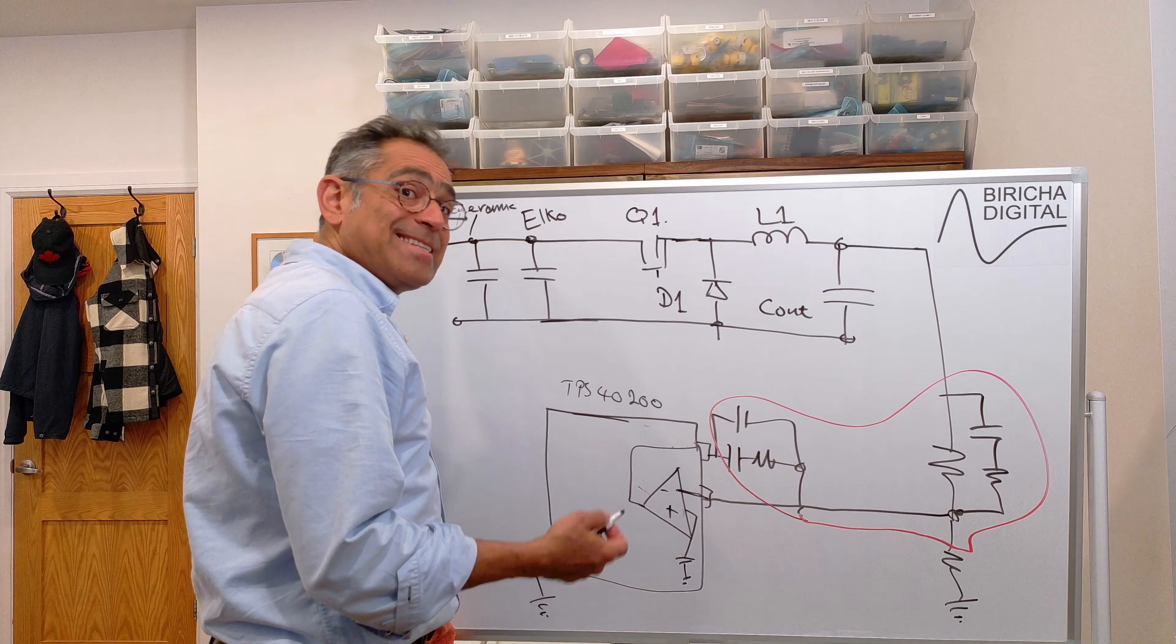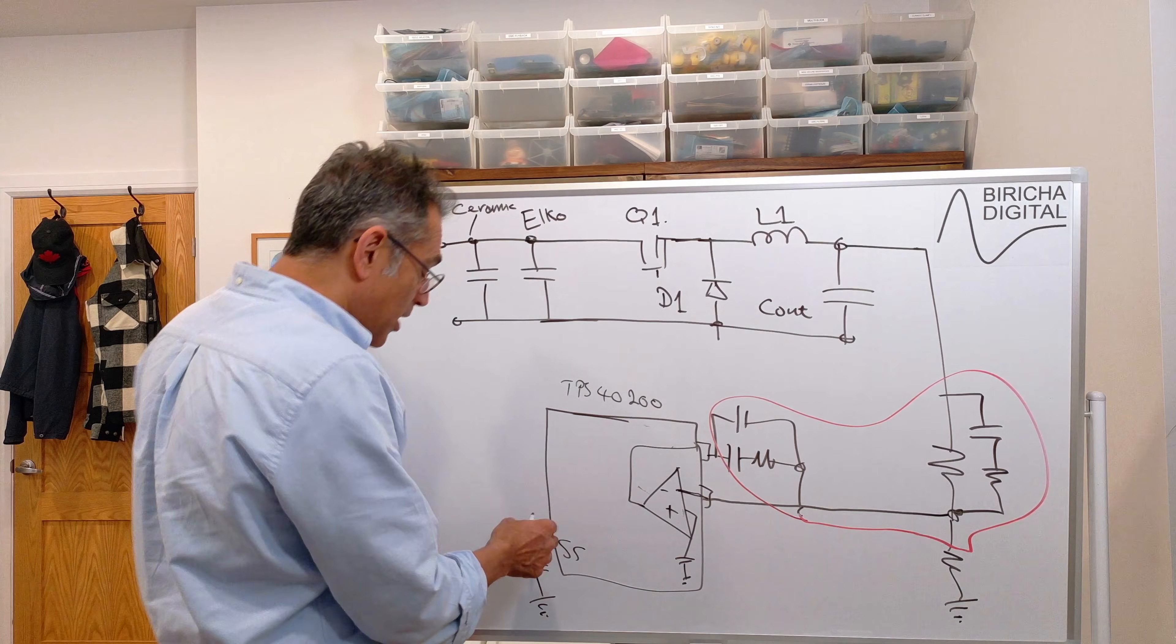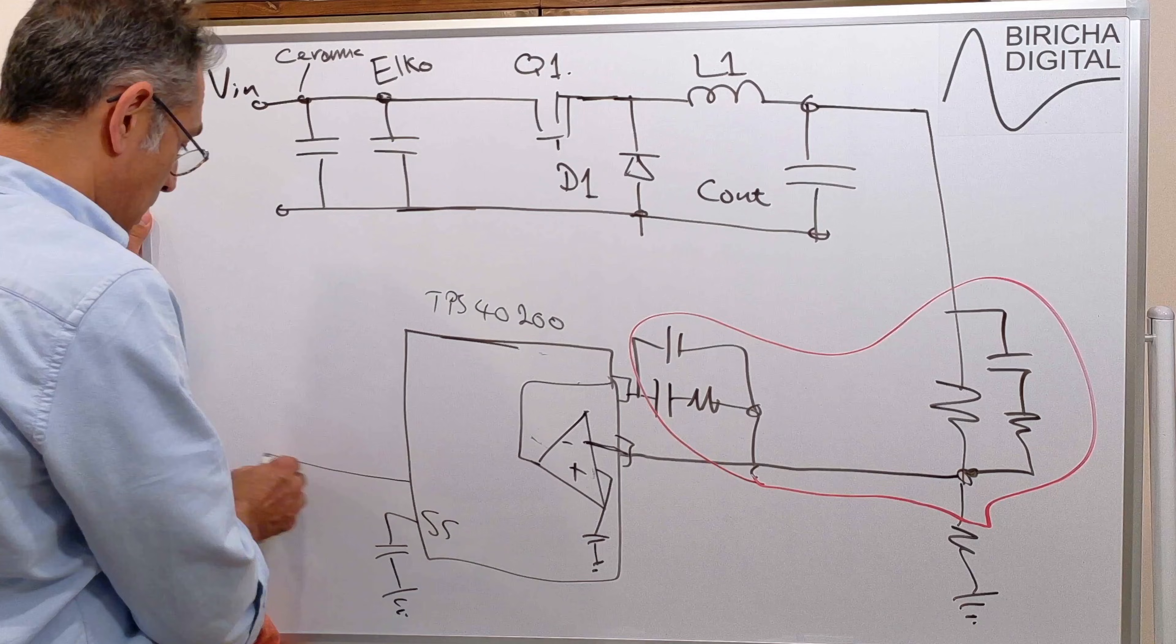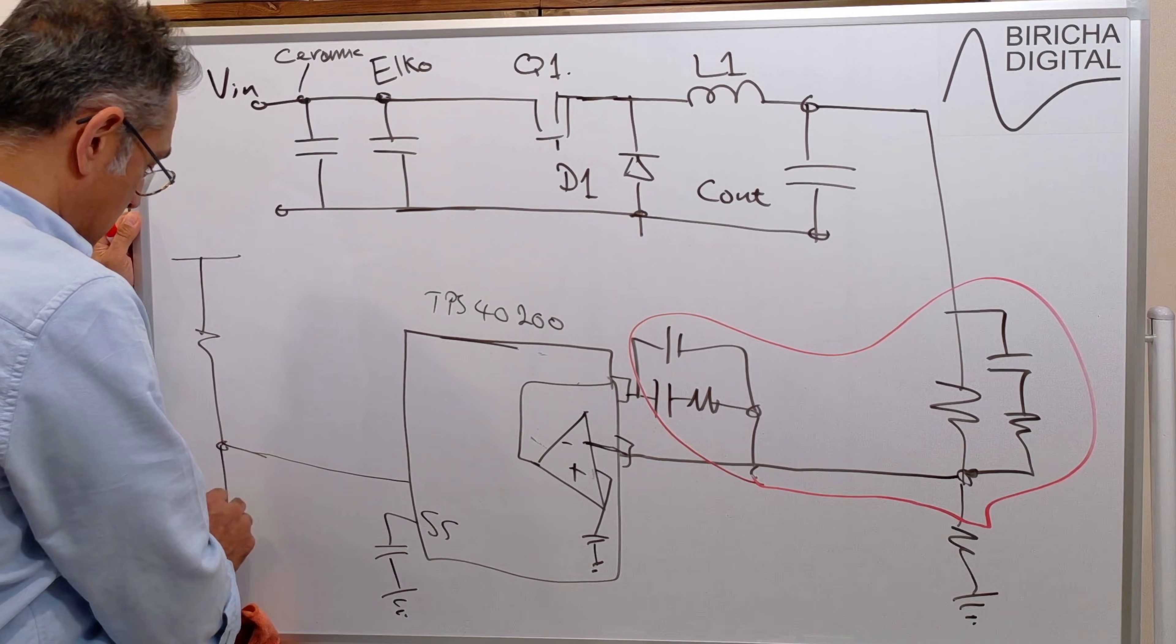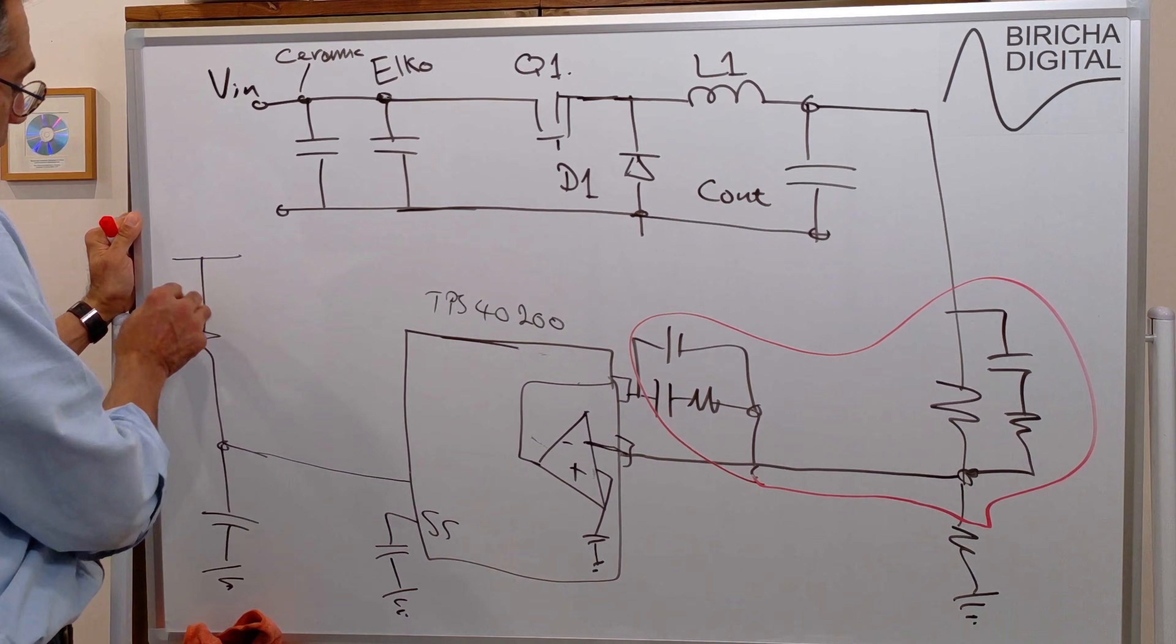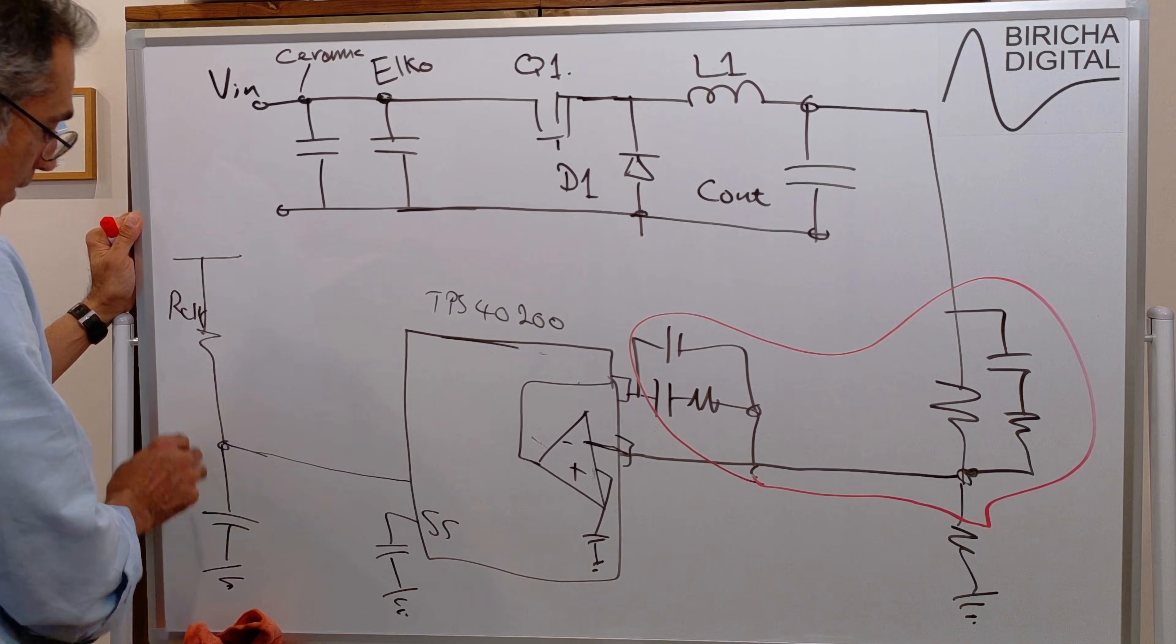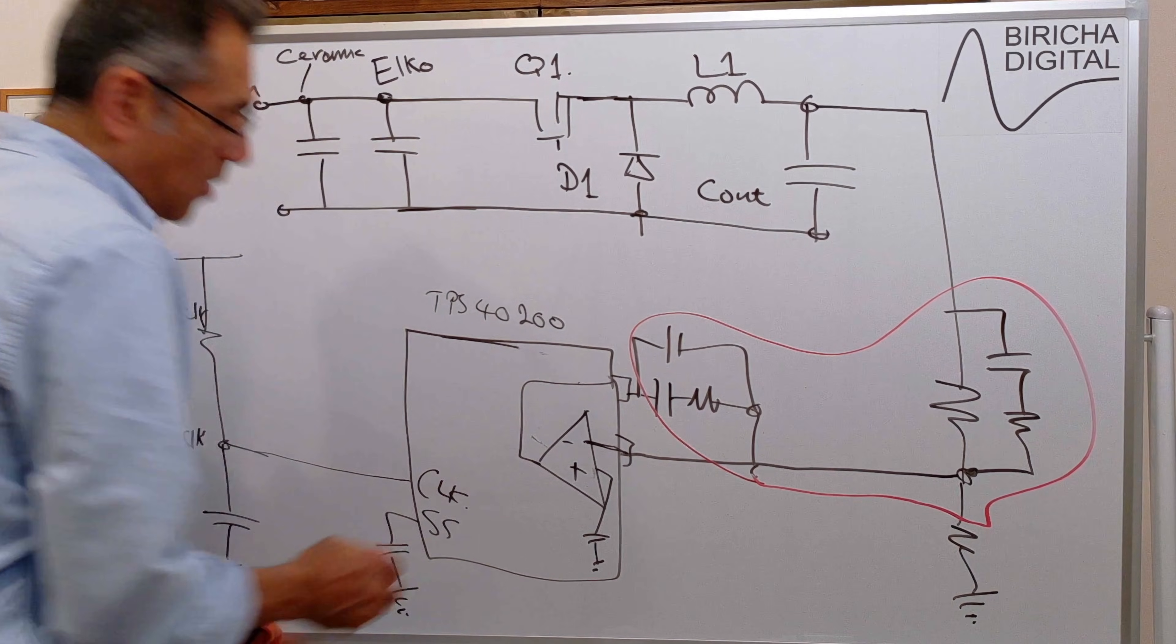There will be at least one capacitor or a capacitor resistor in order to do the clock. So let us do resistor capacitor. Let's call this Rclock. And let's call this Cclock. And this is your clock.